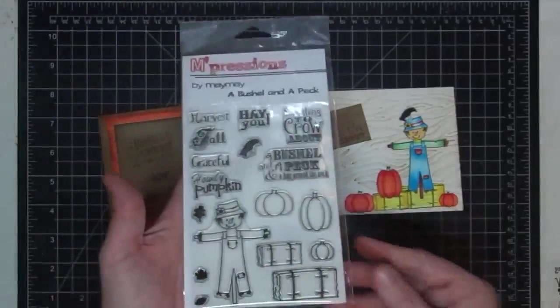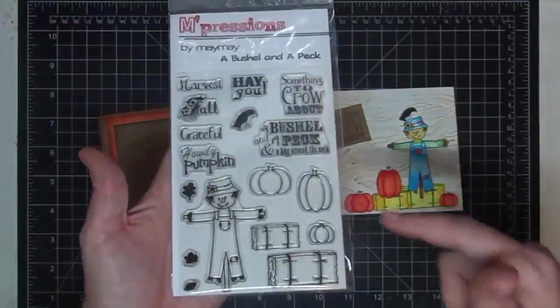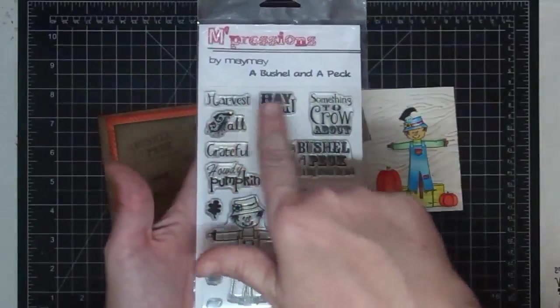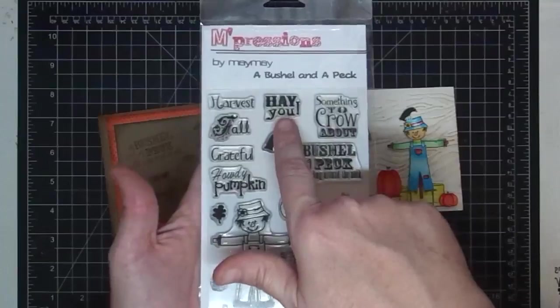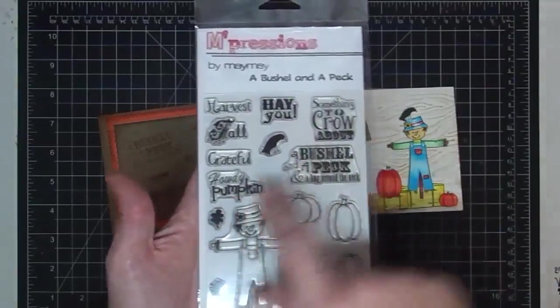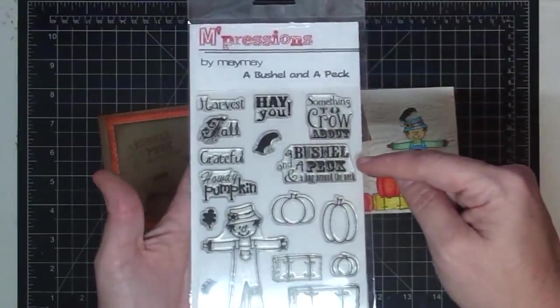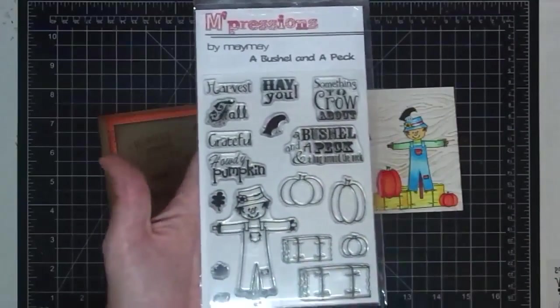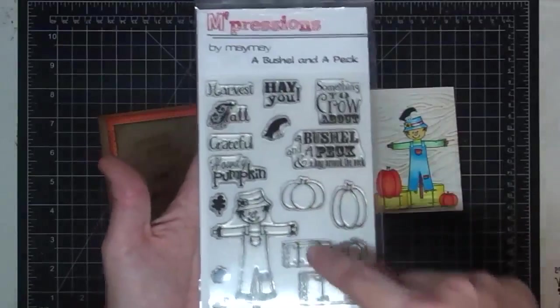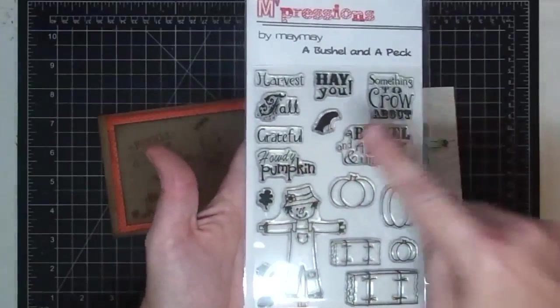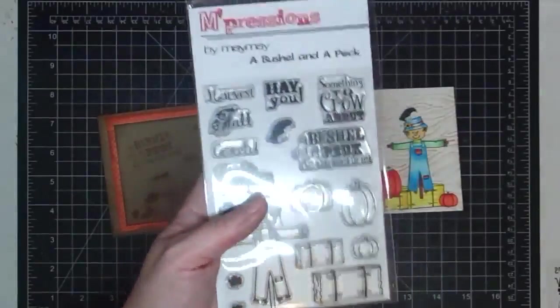And it has seven sentiments. They are harvest, fall, hay you spelled like a hay bale, grateful, howdy pumpkin, something to crow about, a bushel and a peck, and a hug around the neck. And then you get all of these little sentiments, which are the scarecrow, three pumpkins, two hay bales, three leaves, and a crow to go with your scarecrow.